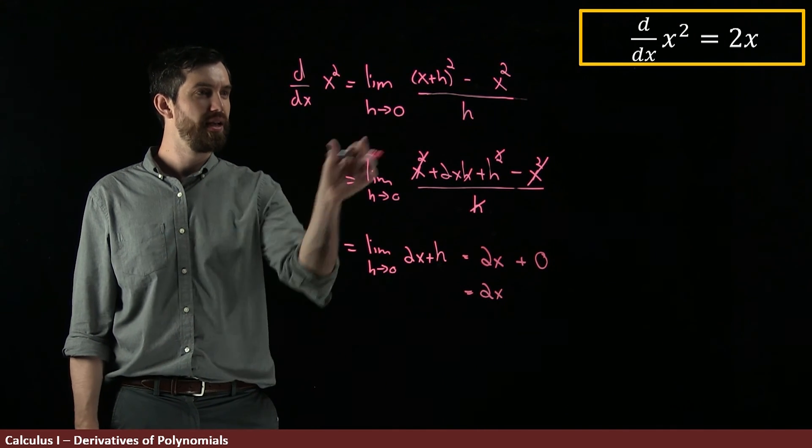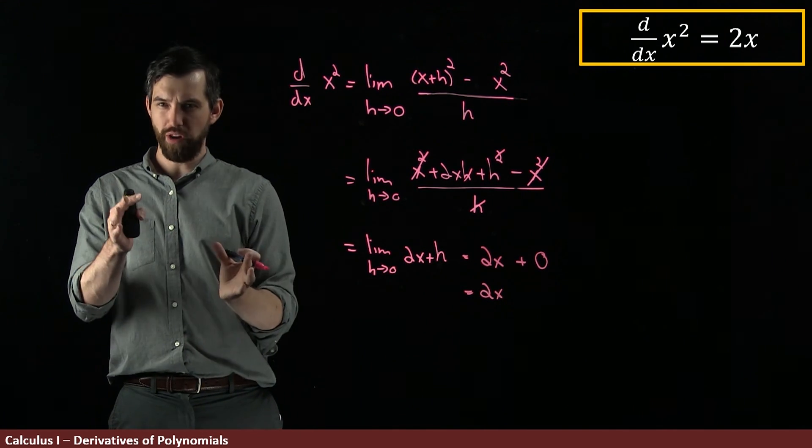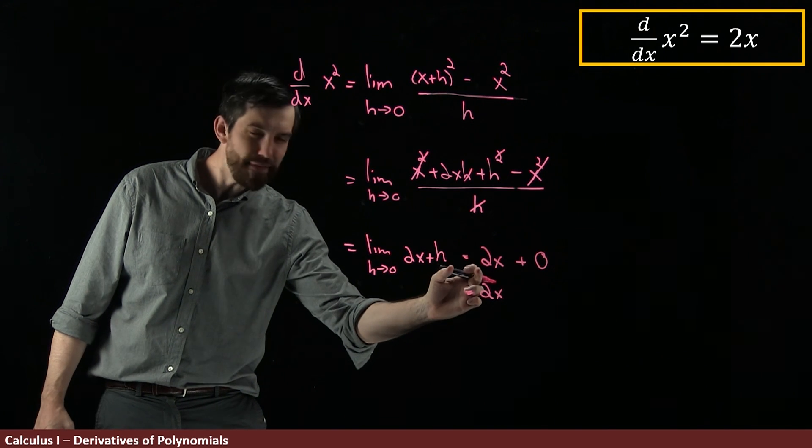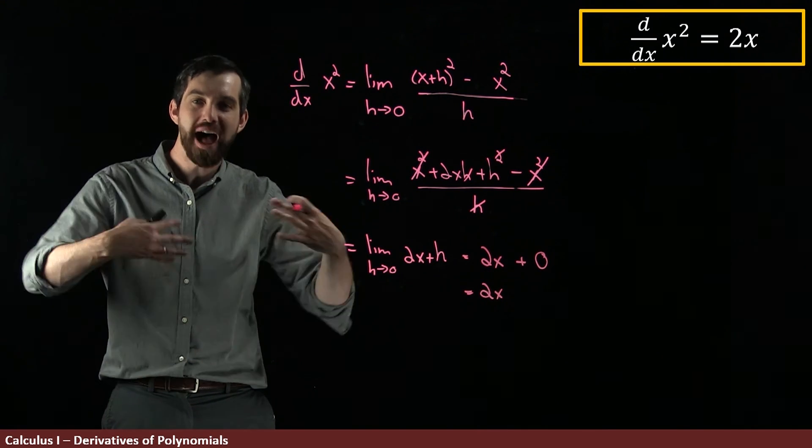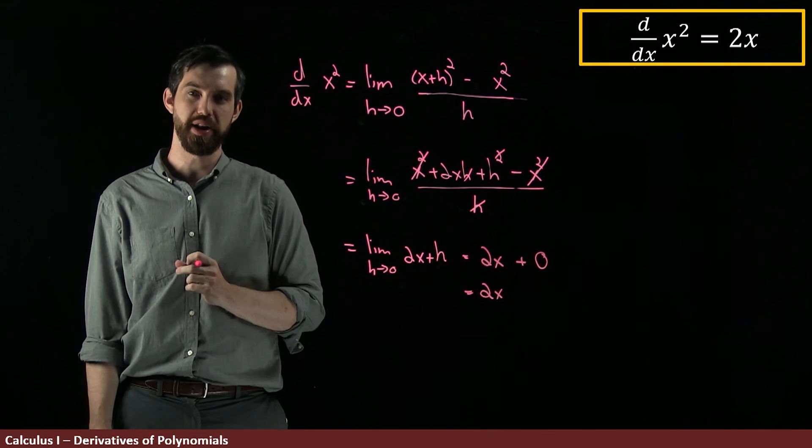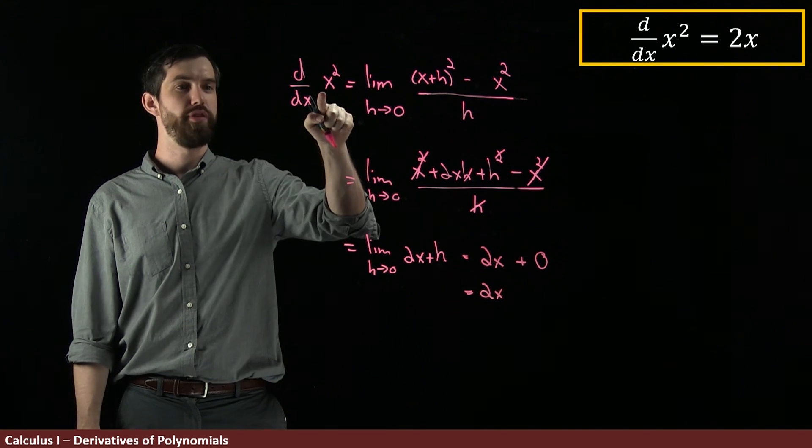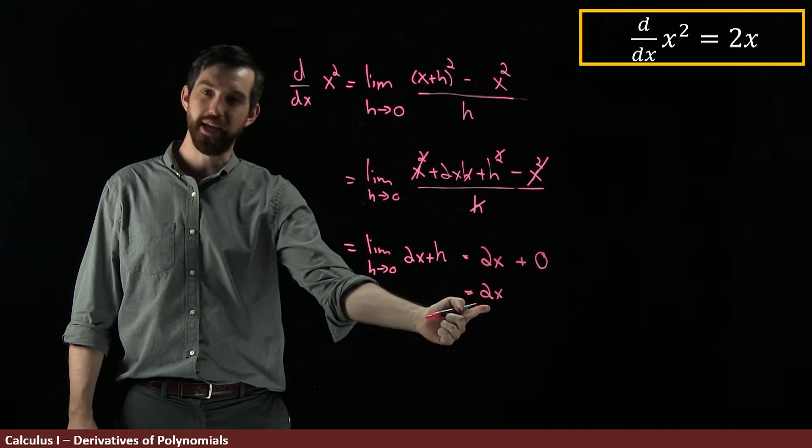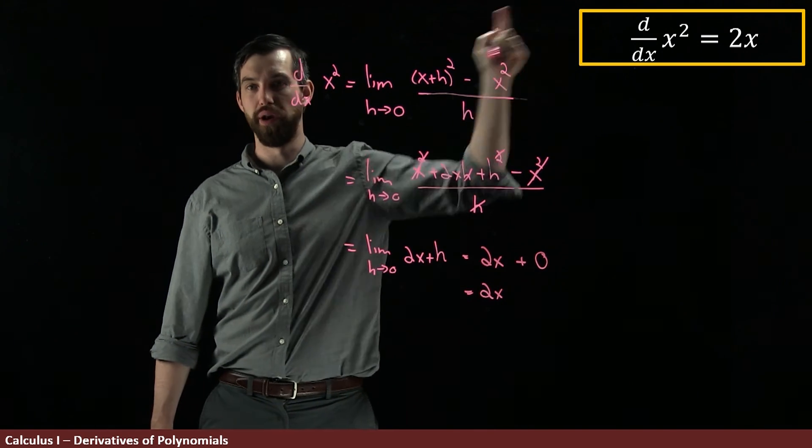And notice my notation: limit, limit, limit. I have it at all of my steps except for this final step where I'm evaluating the limit, so I no longer write it down. But either way, the derivative of x² is equal to 2x. So I have proven what I wanted to show.